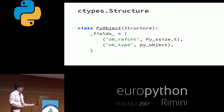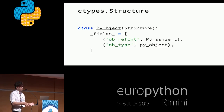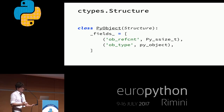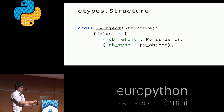Another really powerful feature of ctypes is the Structure type. The only thing we'll really be concerned with is the _fields_ attribute — it's a list of two-tuples where the first item is the name and the second is the type. These provide a way to create Python objects that act like C structs and can be passed as C structs into C functions. Here I've listed the struct definition for the base Python object, py_object, which has two fields: ob_refcount, which is the reference count as a Py_ssize_t, and then a pointer to the object's type.